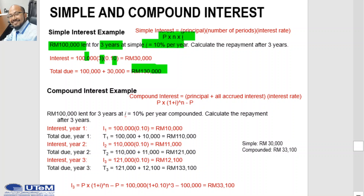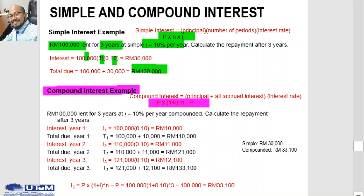How about compound interest? Let's look at compound interest calculations. Using the compound interest formula with the same example — principal RM100,000 lent for 3 years at 10% per year compounded — we calculate the repayment after 3 years. Because for compound interest, the interest accrued for each period is calculated on the principal plus total interest accumulated in all previous periods. Thus, compound interest means interest on top of interest.